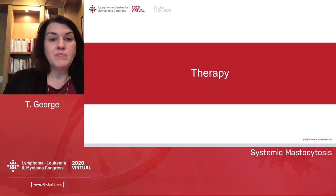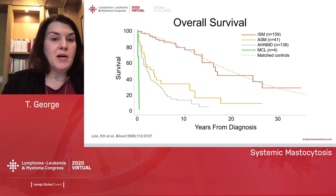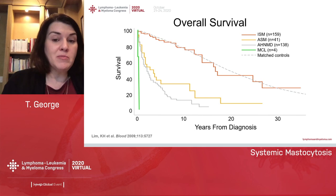Now I'll spend the bulk of time talking about therapy. This Kaplan-Meier curve from the Mayo group shows that patients with indolent disease behave the same as age-matched controls in overall survival, whereas patients with mast cell leukemia, SM-AHN, or aggressive systemic mastocytosis have much worse overall survival. This was the situation until a few years ago.